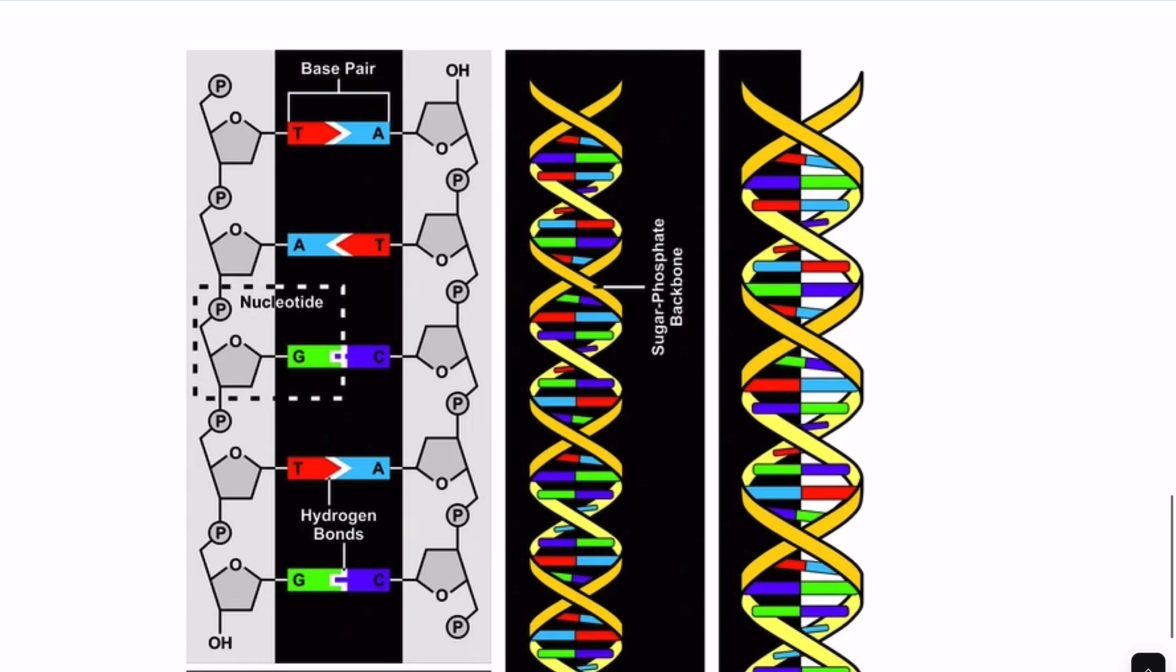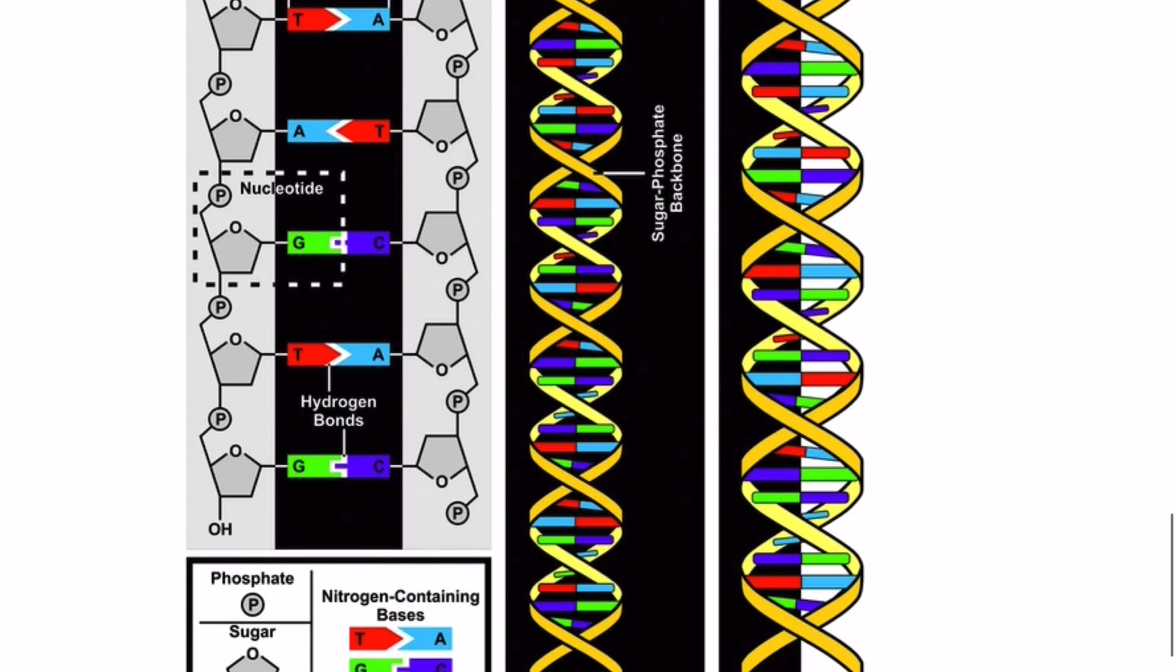And without these hydrogen bonds, DNA wouldn't be able to form. So you can pretty much ignore these backbones here. So here's thymine, adenine, and this white part here is the hydrogen bond. Or if we look here, this is what's holding all of these—hydrogen bonds holding the DNA base pairs together—that's what's holding together the entire double helix.